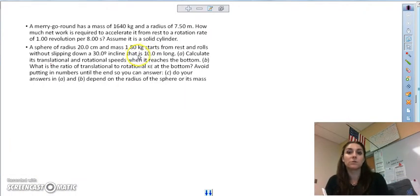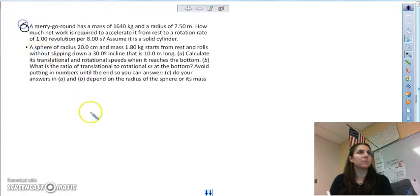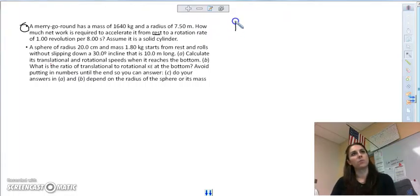We're going to shift gears and do some energy problems now, rotational energy. The merry-go-round has that mass and radius. How much net work is required to accelerate from rest from one revolution per eight seconds? The net work, we have a change in velocity. So immediately when I see that, I think of the work energy theorem. So if I find the change in rotational kinetic energy, I will find the net work on our system.